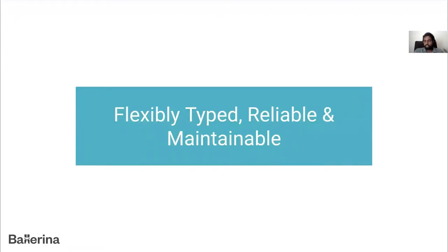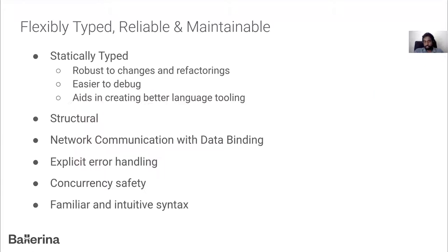Before getting our hands dirty, let's discuss how Ballerina looks as an overview. Ballerina is a flexible type language — reliable and maintainable. It is statically typed, so type compatibility is validated at compile time. It is structural, meaning Ballerina compares the shapes of types instead of names to determine sub-typing. Ballerina has explicit error handling, is concurrent, and has a familiar, intuitive syntax, which we'll see during the demo.